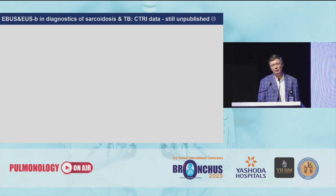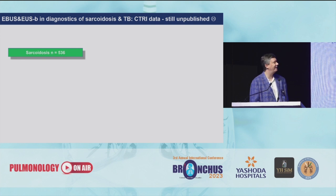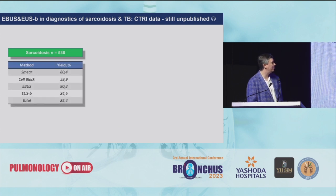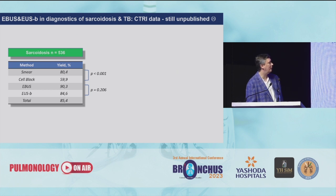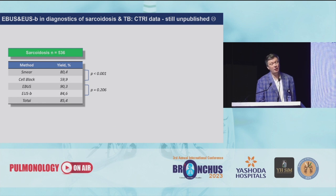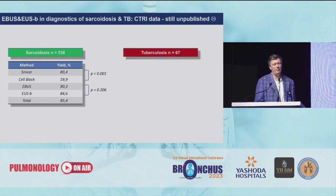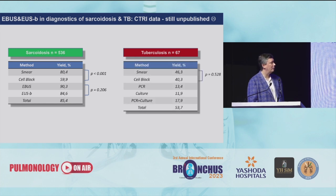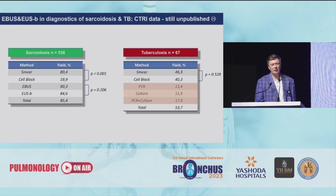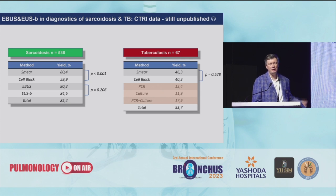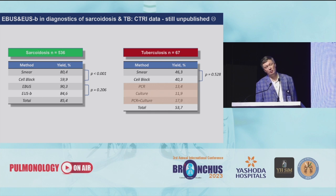Our local data from the Central TB Research Institute in Russia — still unpublished, sorry for that. For sarcoidosis, more than 500 patients were involved. You can see that the smear and cell block have a definitive difference — cytology in our clinic has a better yield. When we compare the EBUS and EUS approach, they are equal. For tuberculosis, unfortunately we didn't have many patients with isolated lymphadenopathy — we diagnosed mostly pulmonary TB. The yield of cytology and pathology in diagnosing tuberculosis is appropriate, around 60%. But when we have culture and PCR, the yield is much, much lower — even lower than anything reported, probably because our TB strains are quite different.